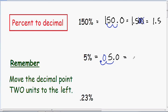Instead of having 5.0, now we have .050. Your final answer should never have a trailing zero — .050 is exactly the same as .05. And once again, let's double check our answer. Our decimal should always be smaller than our percentage. Notice our decimal of .05 is certainly smaller than our percentage of 5.